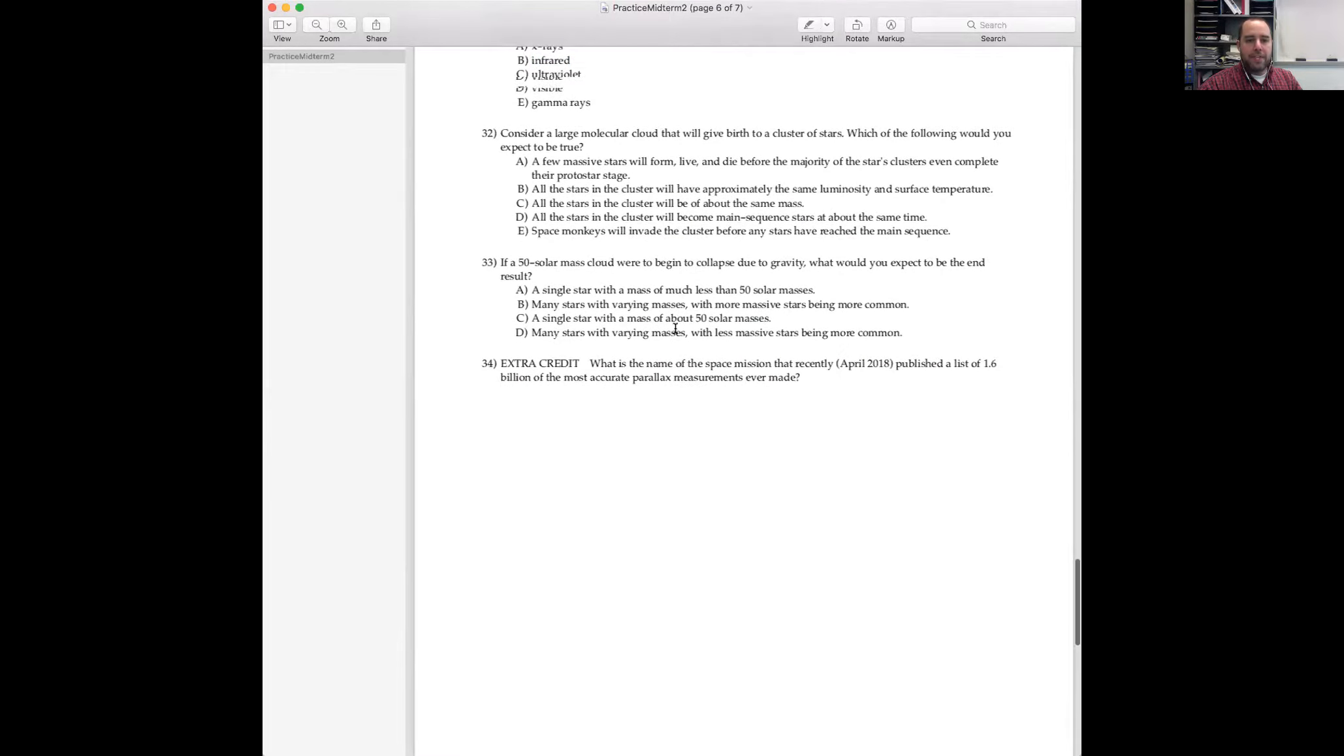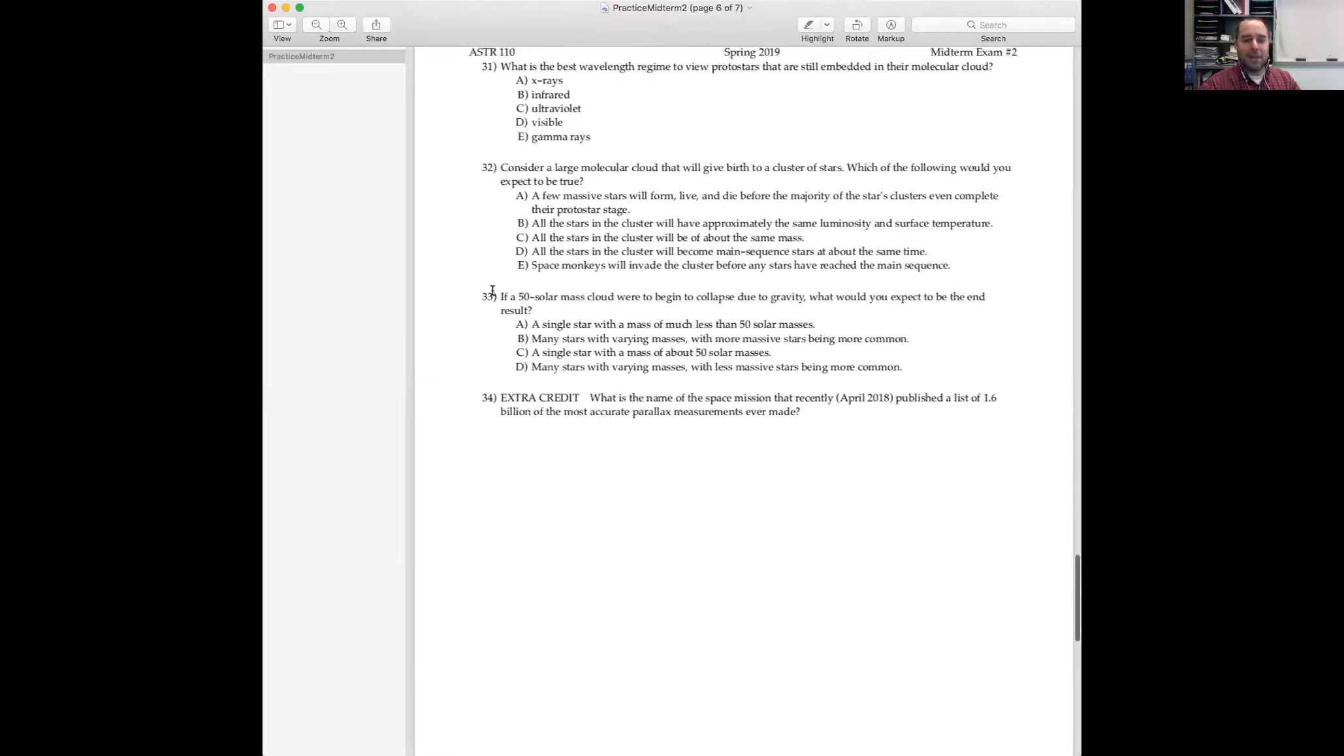We've got about four minutes. Any other questions? 33. If a 50 solar mass cloud were in the collapse due to gravity, what would you expect the end result? Again, this is also something that I showed in the video lecture, I think in three yesterday. I actually showed a simulation of a 50 solar mass cloud beginning to collapse. So you should go watch it. It's kind of fascinating. But you get many stars with varying masses. You do not expect the more massive stars to be more common. This is another lesson from yesterday. You expect less massive stars to be more common. And so you get many stars with varying masses with less massive stars being more common. That is the right answer to that one.